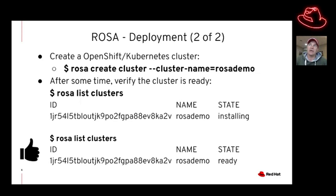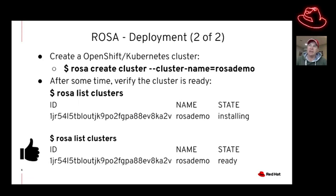To deploy a cluster, type ROSA create cluster --cluster-name and provide any name you like — I used ROSA demo. After some time, you can type ROSA list clusters to show the state of the cluster. I ran it twice: once while it was still installing, showing the state as installing, and then once it completed I ran it again and the state showed as ready.